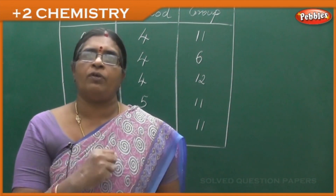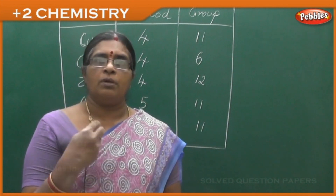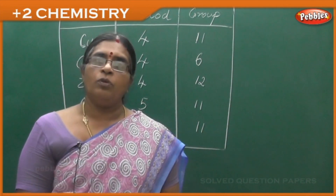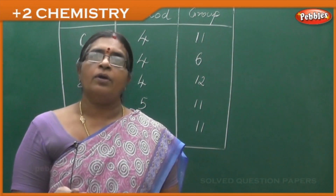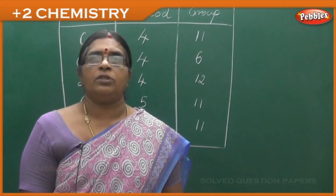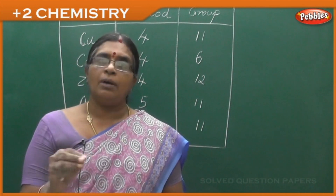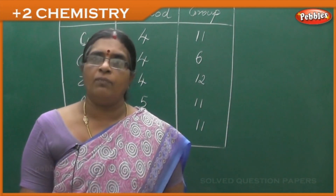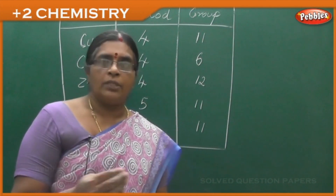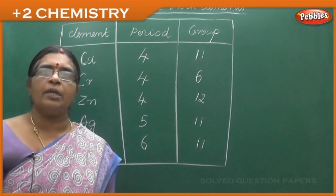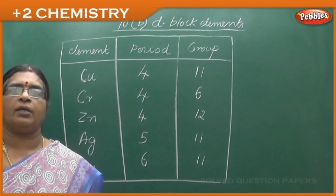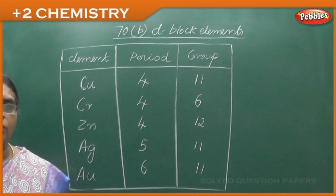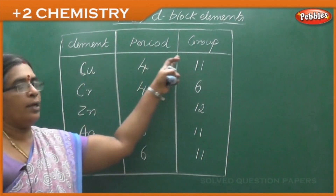Those who are very weak in chemistry, especially the sum part, it is better to at least remember this and get one mark. You can score at least one mark from this main hint. The tabular column has: element, period, and group. You are going to read about only five elements — copper, chromium, zinc, gold, and silver. Sums will come only based on these five elements.